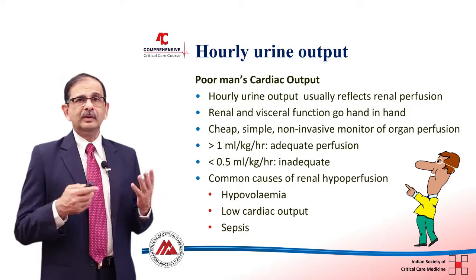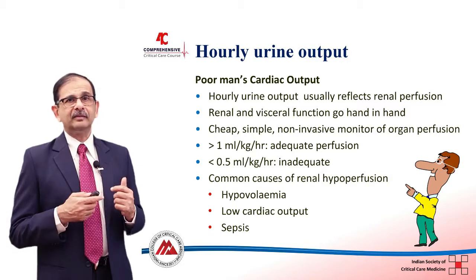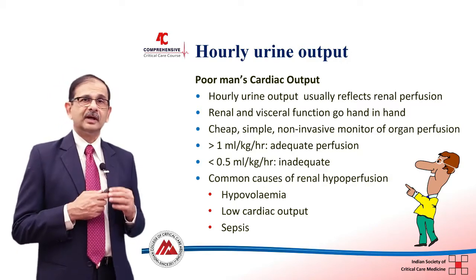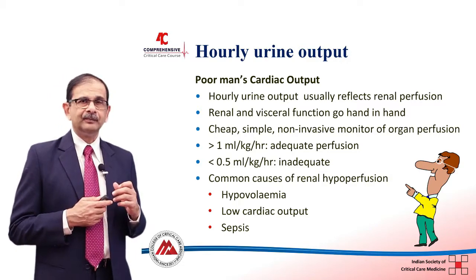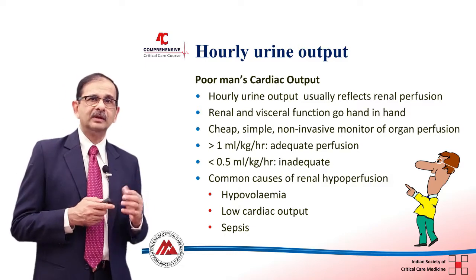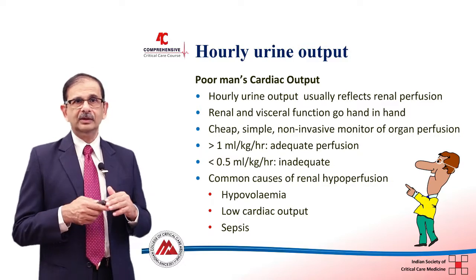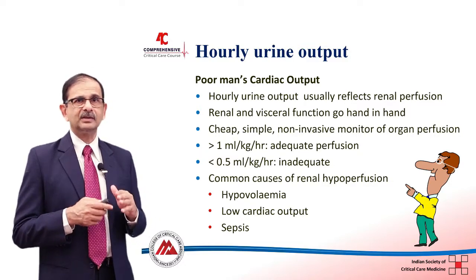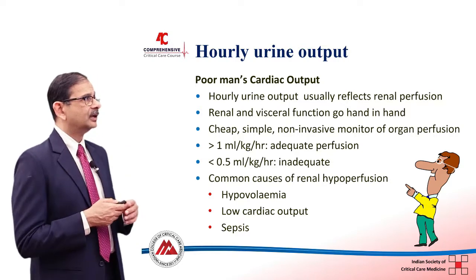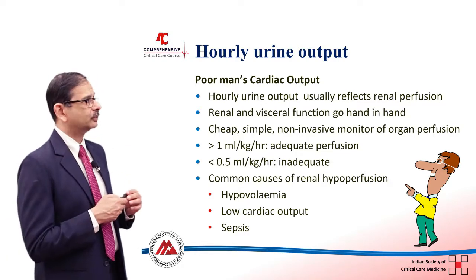Many people do not have cardiac output monitors, but we have a tool available to every intensivist: the hourly urine output. And when I say hourly urine output, I do not mean a 6-hour urine output divided by 6 — I mean the urine output measured every hour by a urometer or similar system. The urine output is therefore called the poor man's cardiac output.